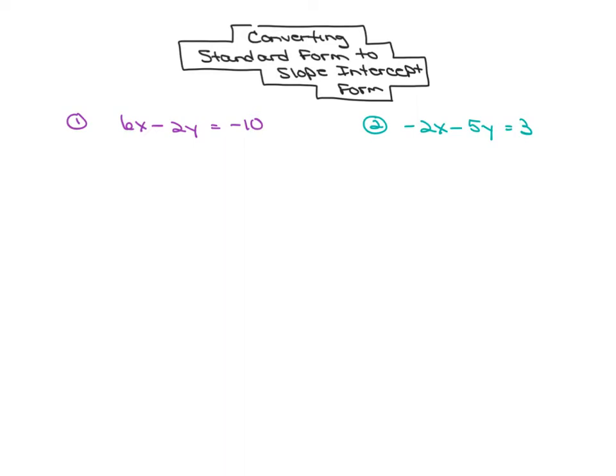We'll do the first one together, and then I'm going to have you try the second one on your own and see how you do. Just as a reminder, slope-intercept form is y equals mx plus b. So to get it in slope-intercept form, we need to isolate y all by itself.